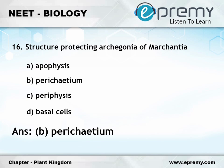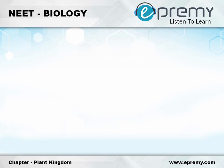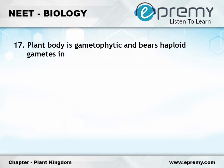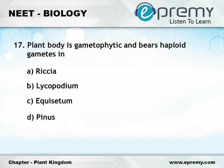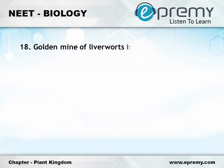...option A apophysis, option B perichaetium, option C periphysis, option D basal cells. The answer is option B perichaetium. Question number seventeen: plant body is gametophytic and bears haploid gametes in option A Riccia, option B Lycopodium, option C Equisetum, option D Pinus. The answer is option A Riccia.